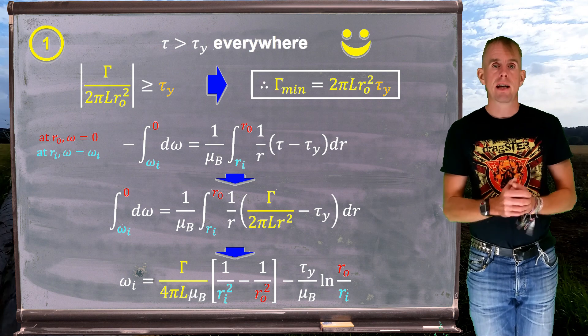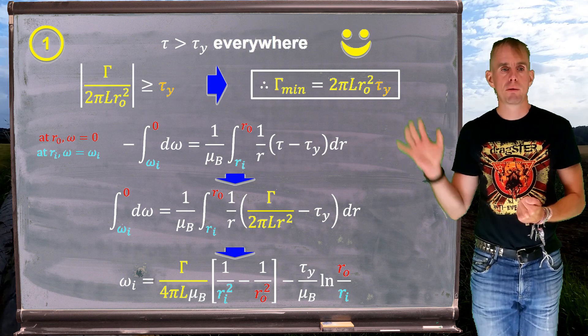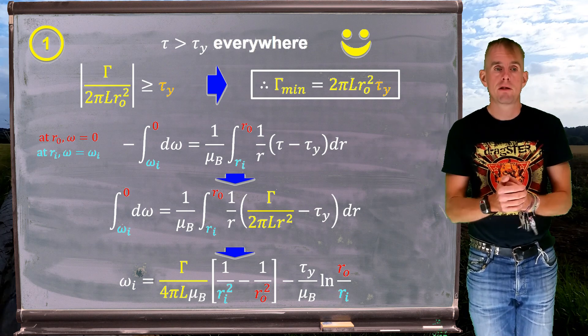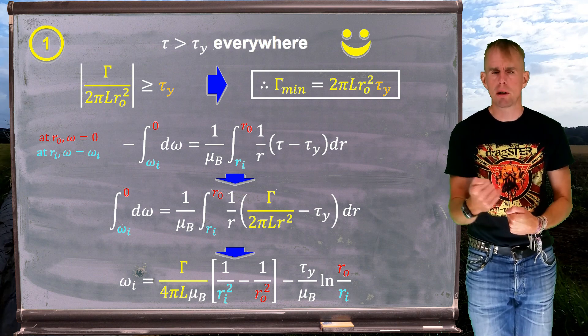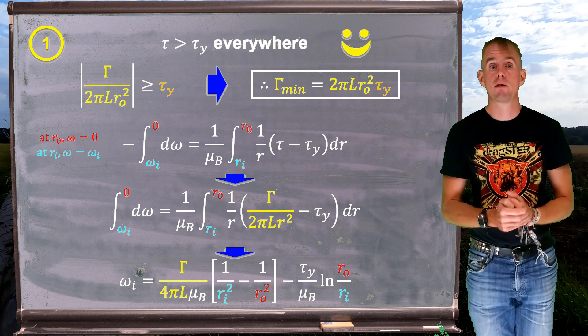So the result that I get is for the angular velocity at the inner cylinder is equal to a group of terms including torque, another group of terms involving geometry, 1 over ri squared minus 1 over r0 squared. This result might look a bit familiar. And then a group of terms involving yield stress.